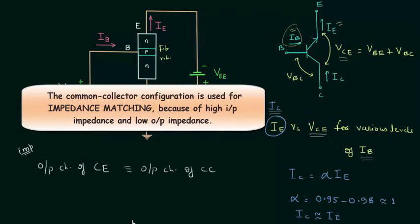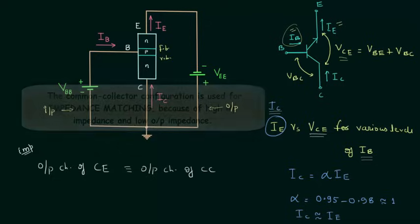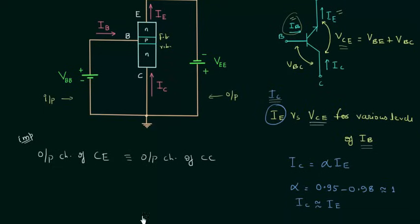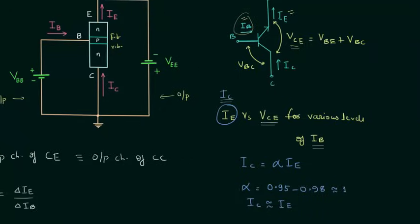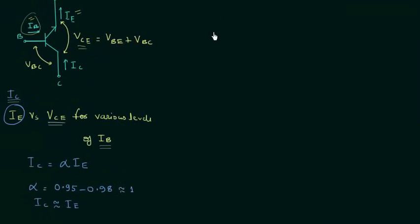The next thing is the current amplification factor in the common collector transistor. It is denoted by gamma, and it is the ratio of the change in emitter current to the change in base current — that is, the ratio of the change in output current to the change in input current. We already know that the emitter current IE is equal to the collector current plus the base current.